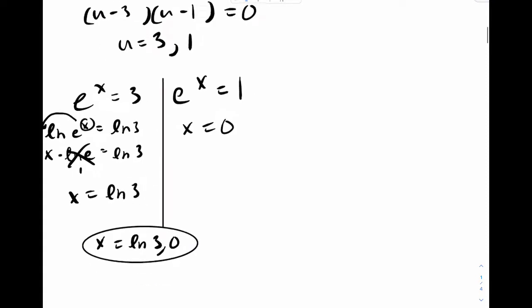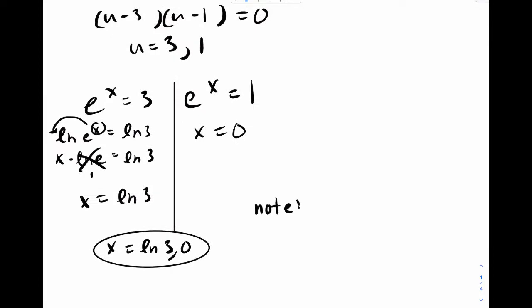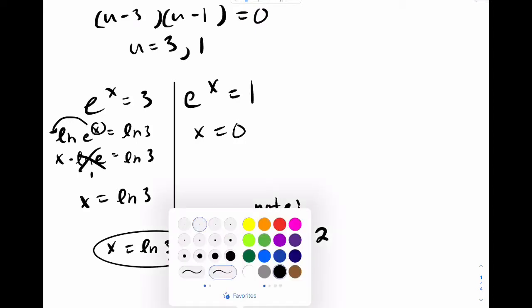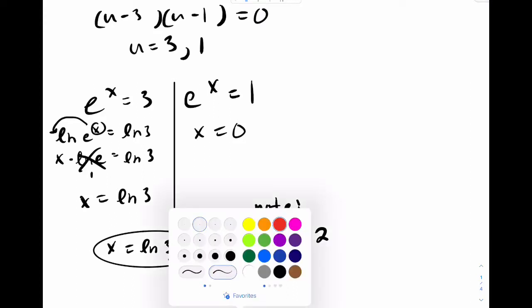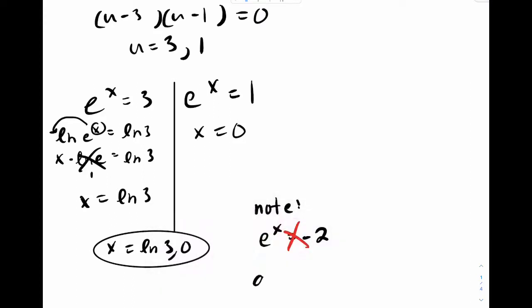One thing to be careful of. So we'll put a note. If you ever get something exponential like e to the x that would equal a negative number, make sure you know that this is impossible. That anything to a power, so let's say like a to the x, this can never be a negative number. So let's be aware of that as you're working on your problems.